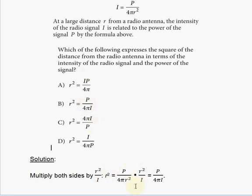And on the right side, eliminates the r squared, right? And then we're left with p divided by 4 pi i, right? 4 times pi times i.